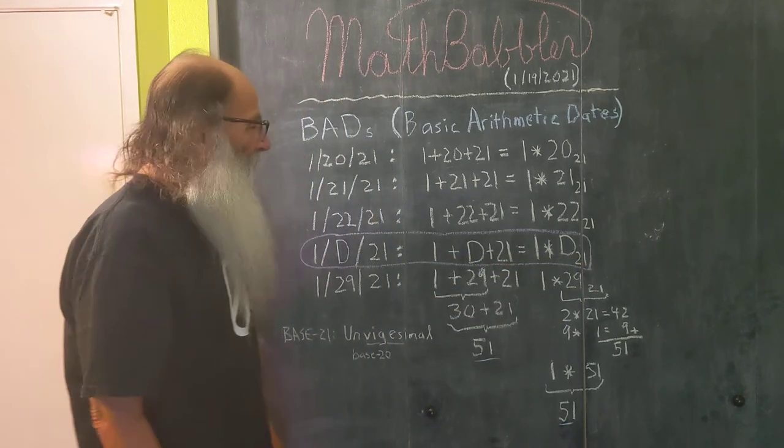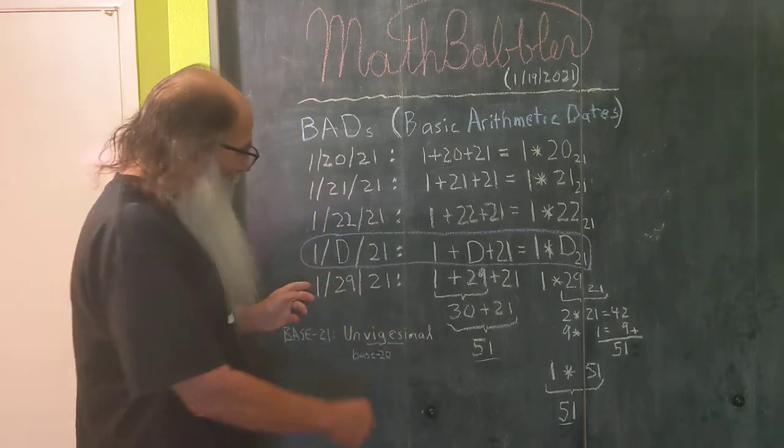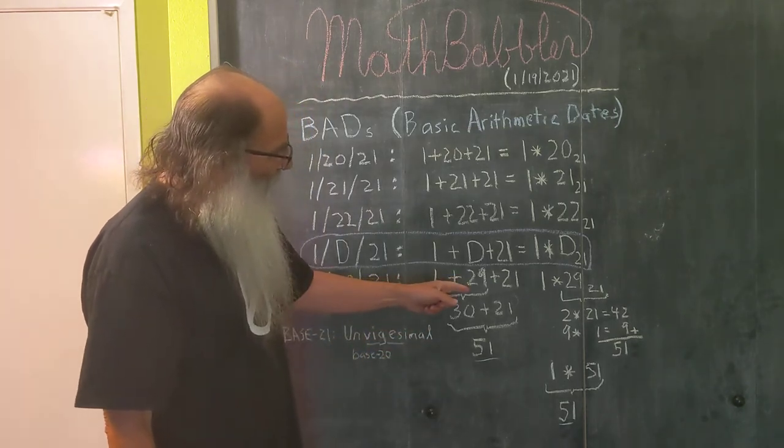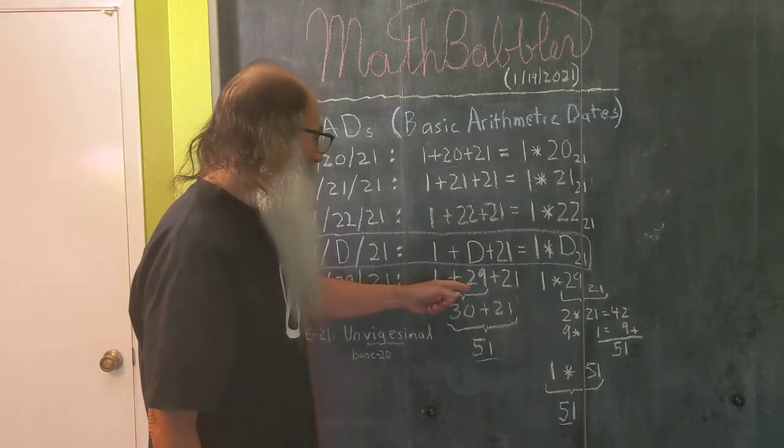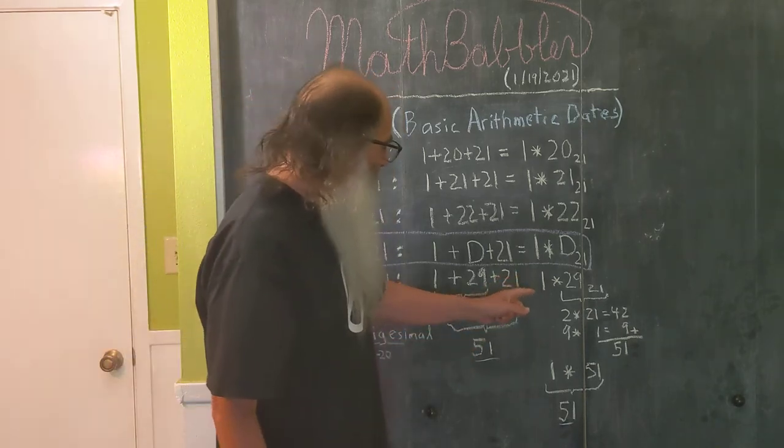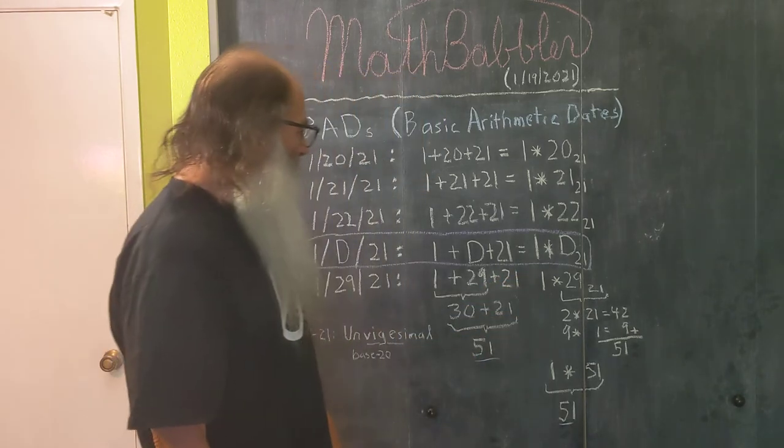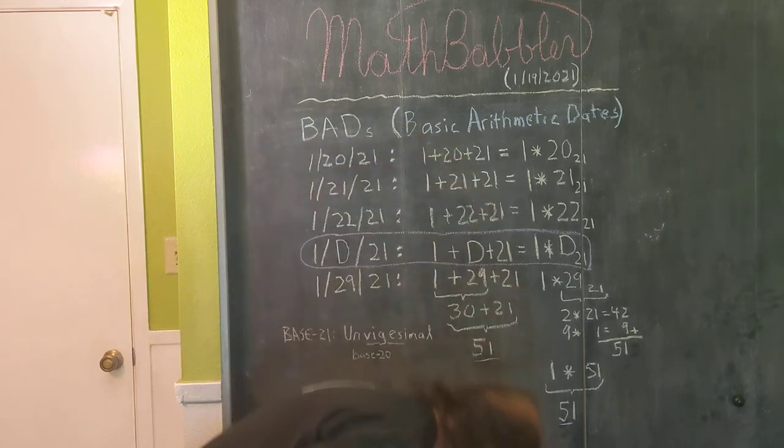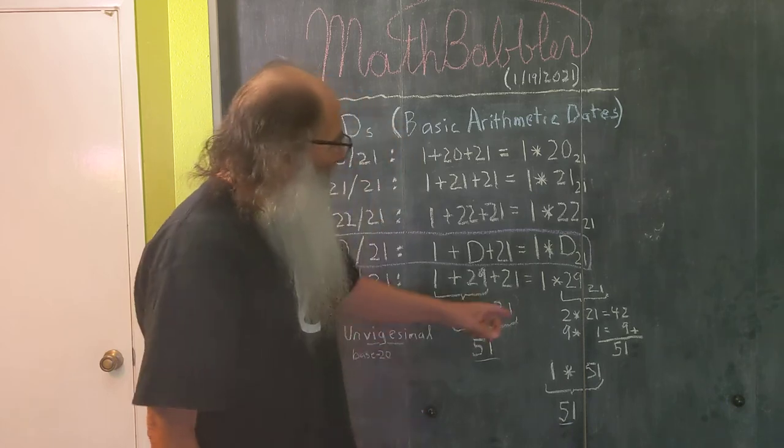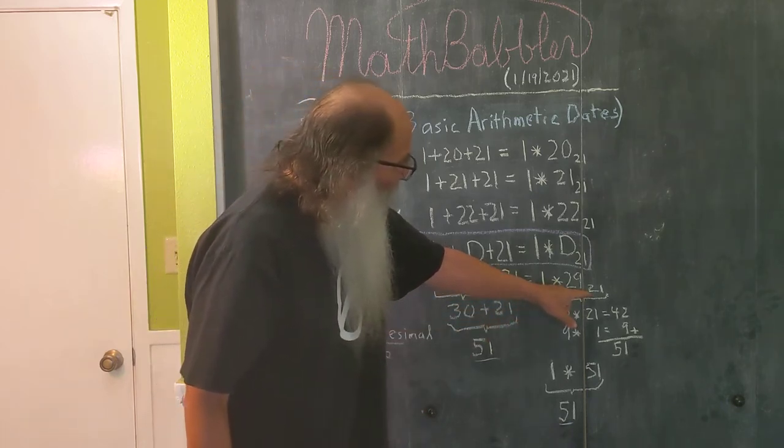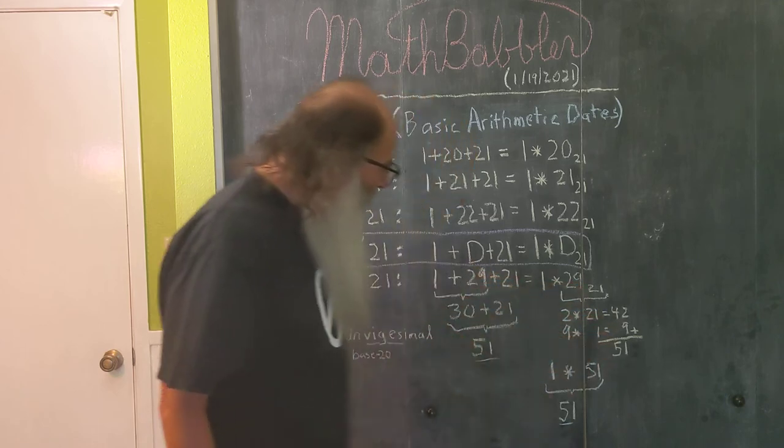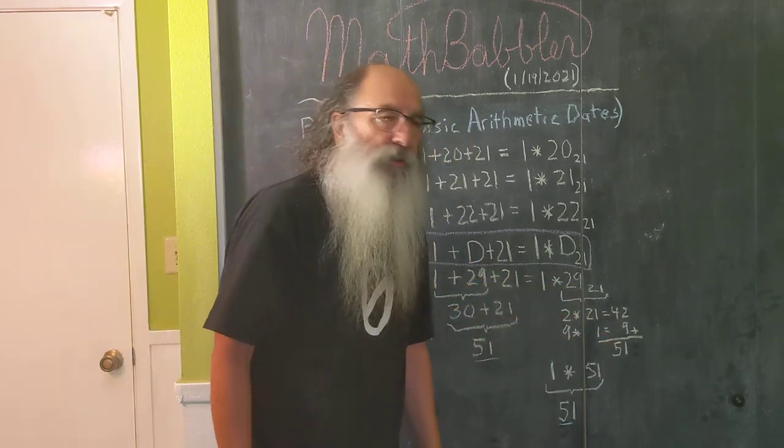And just to show that it works at the end of the month, let's jump to the 29th. Well 1 plus 29, that's 30, plus 21 is 51. Well if we come over here to the right side, and I just noticed that I forgot my equal sign, I'll stick it in there. 2 units of 21 is 42. Add the 9 ones, we get 51. So both sides of the equation are true.